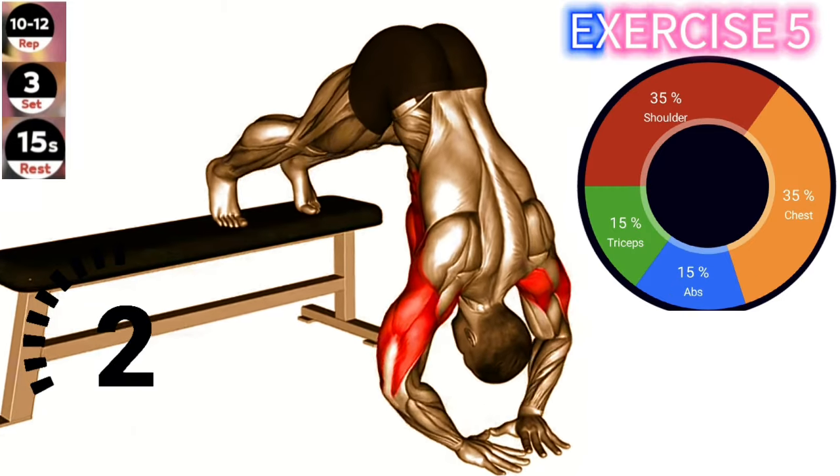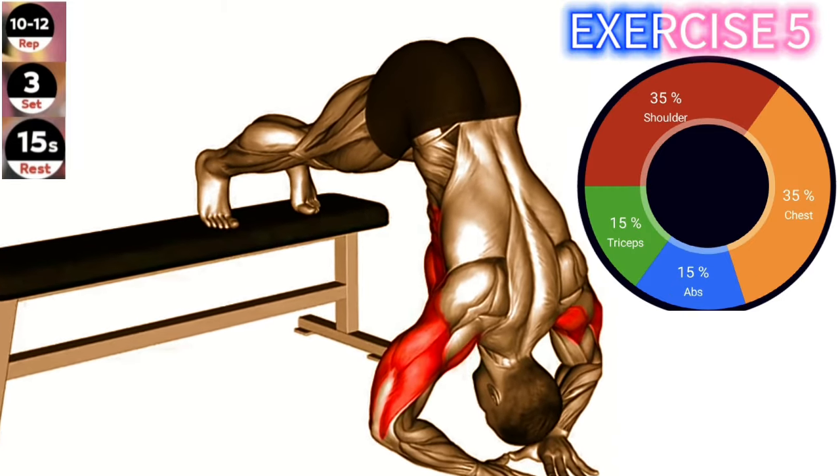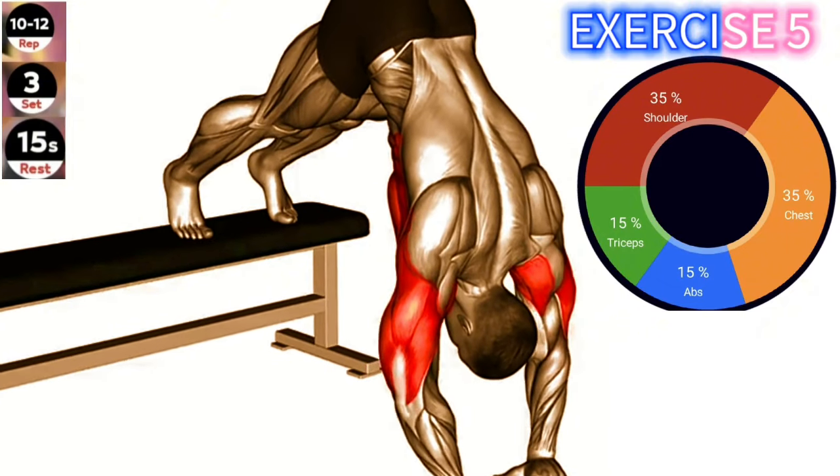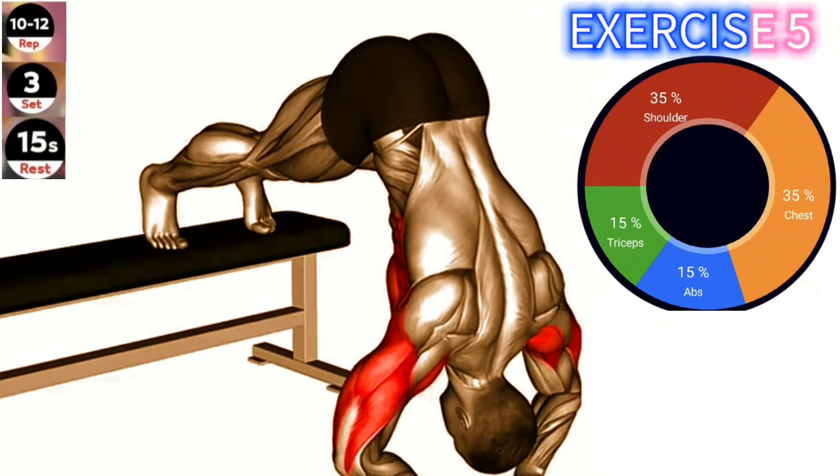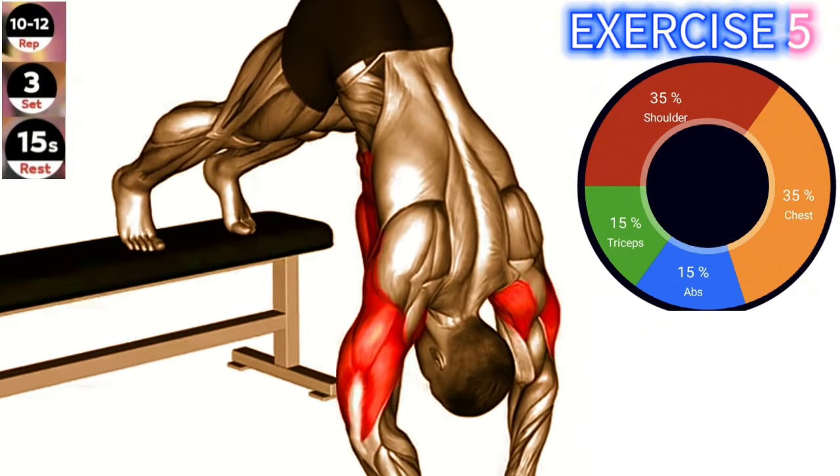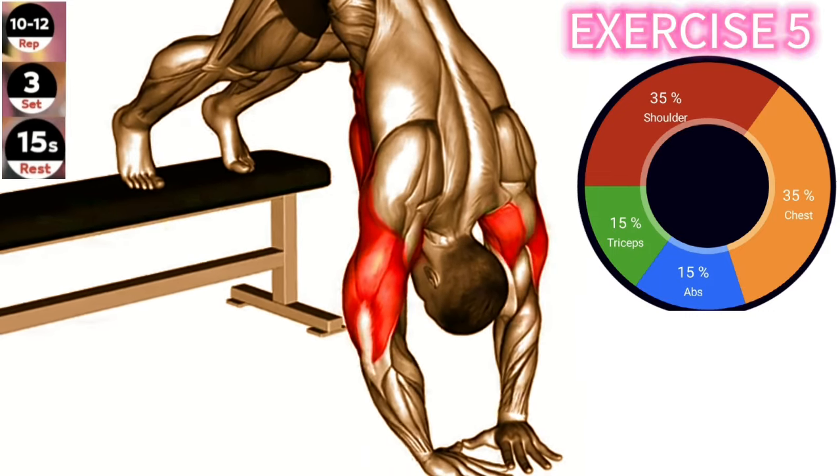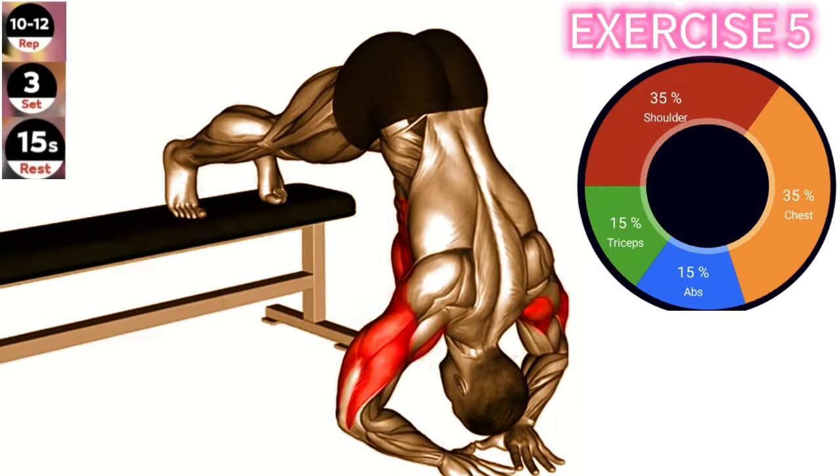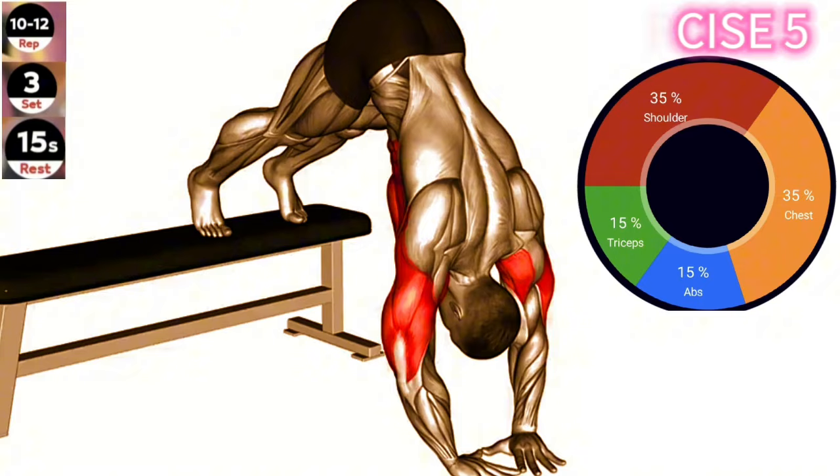Exercise 5. Decline Diamond Pike Push-Up. Engage your core and maintain a straight line from your head to your heels throughout the exercise. Focus on squeezing your shoulder blades together as you perform the pike push-up. Start in a push-up position with your feet elevated on a bench or step, forming a downward slope.